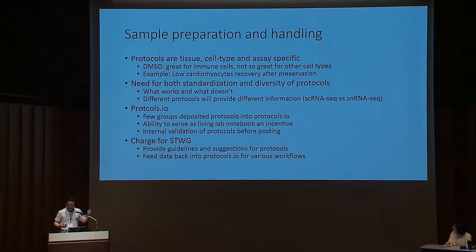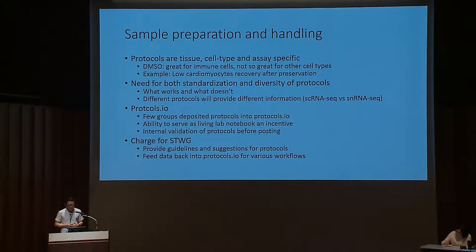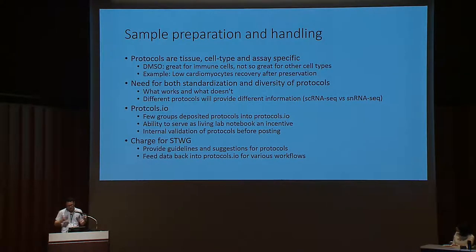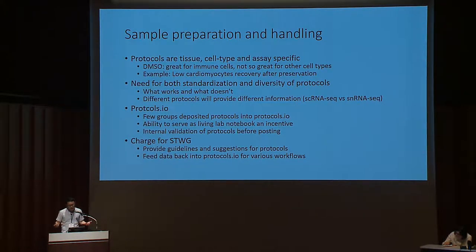After sample sourcing, we discussed how to optimize sample preparation and handling. The key point is that many protocols currently used for dissociation are tissue-specific — a protocol that works for recovering pancreatic cells won't work for recovering other cell types. Within each tissue, protocols could also be cell-type specific. For example, cryopreserving tissue cores with DMSO might be great for isolating immune cells later but not for recovering other cell types.